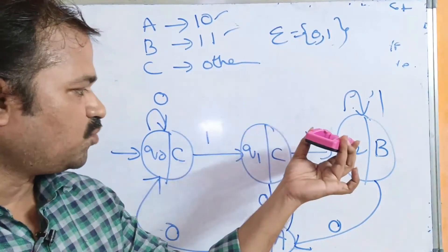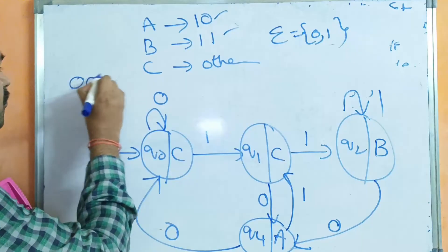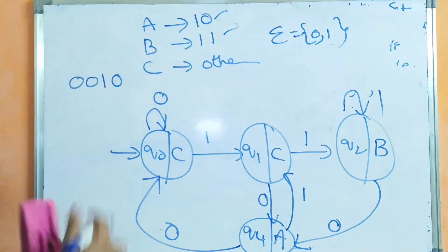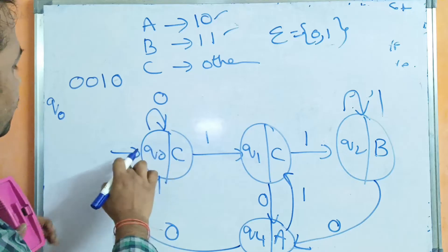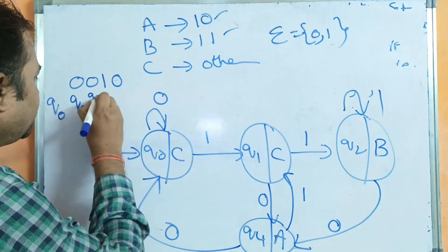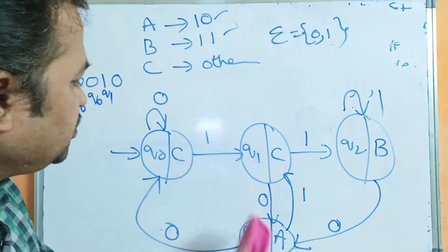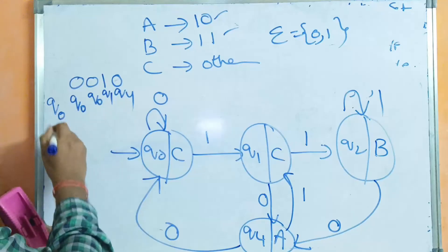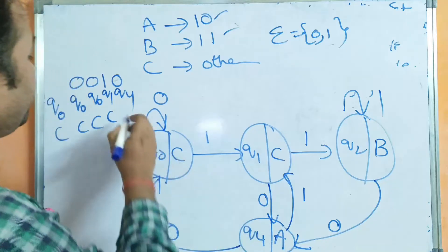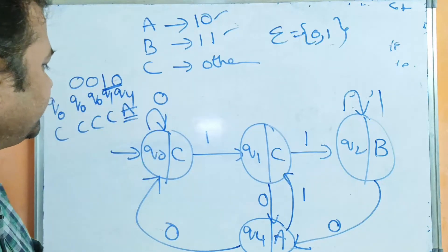This is the Moore machine. Now let's check whether it is correct. Take the string 0,0,1,0. The string is ending with 1,0 so it has to produce A as the output. Initially we are at Q0. Q0 on 0 → Q0, Q0 on 0 → Q0, Q0 on 1 → Q1, Q1 on 0 → Q4. The outputs are C, C, C, C, A. Here we have the 1,0 pattern ending, so we get A as the output.